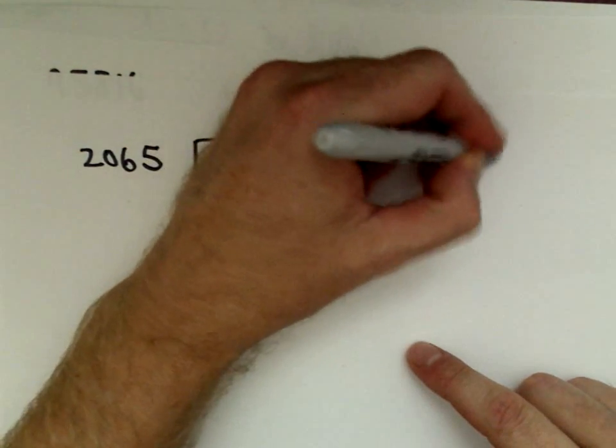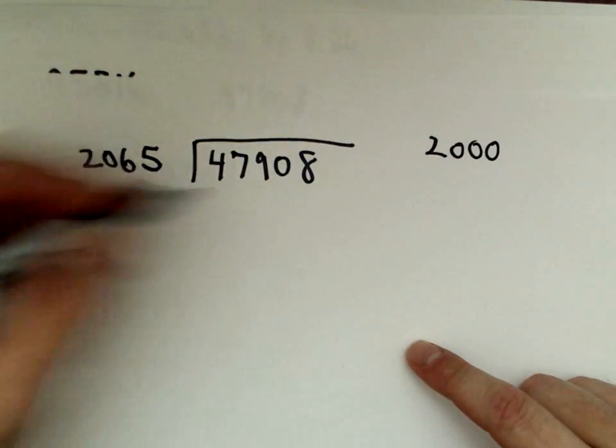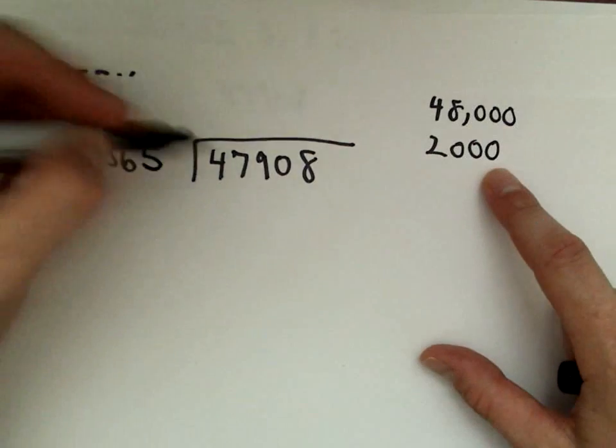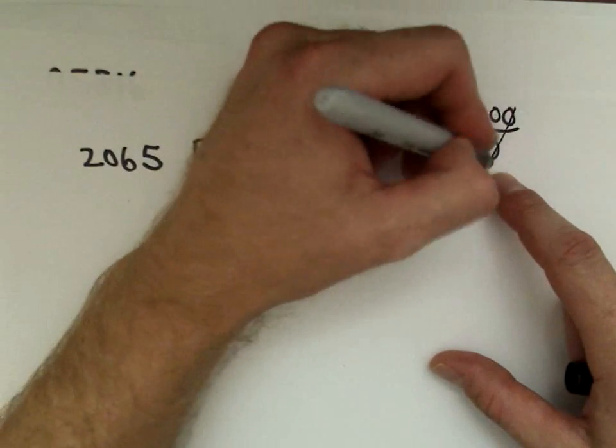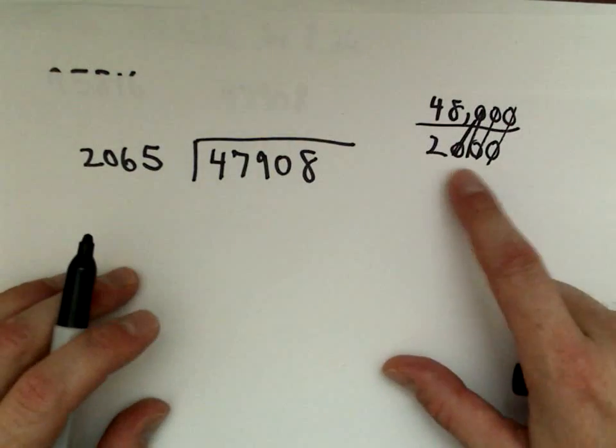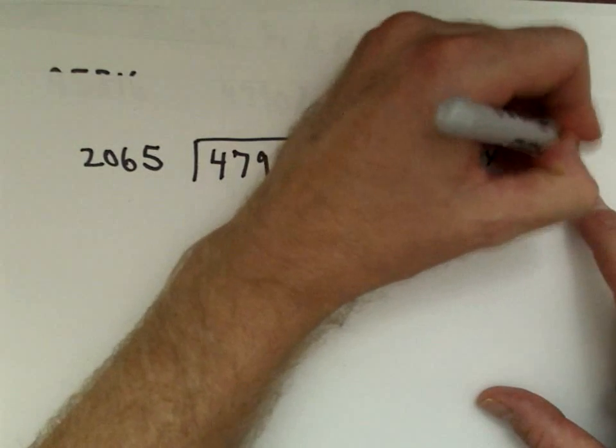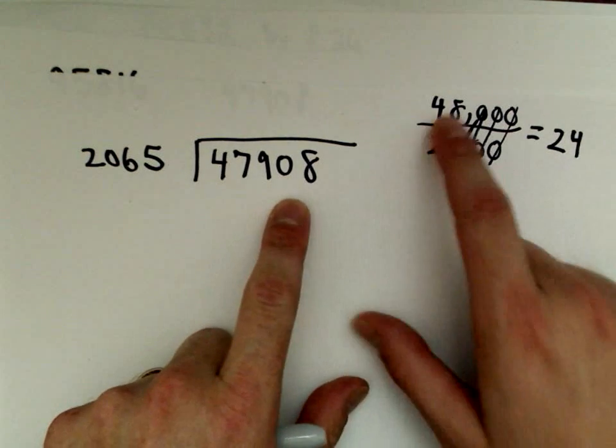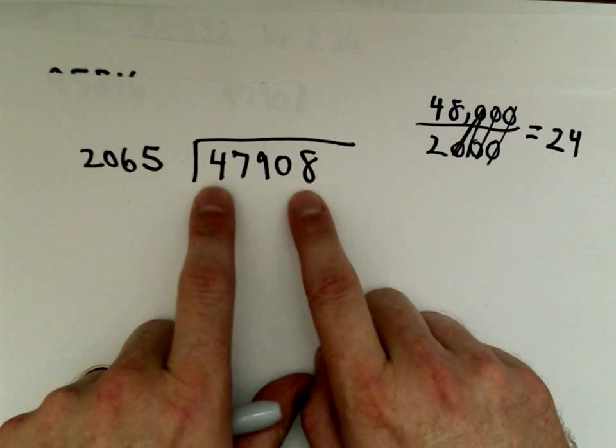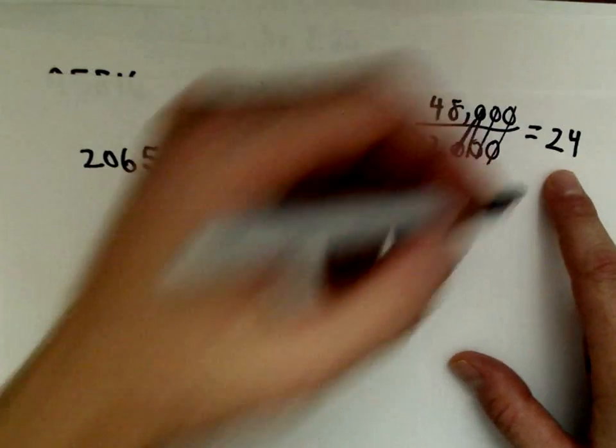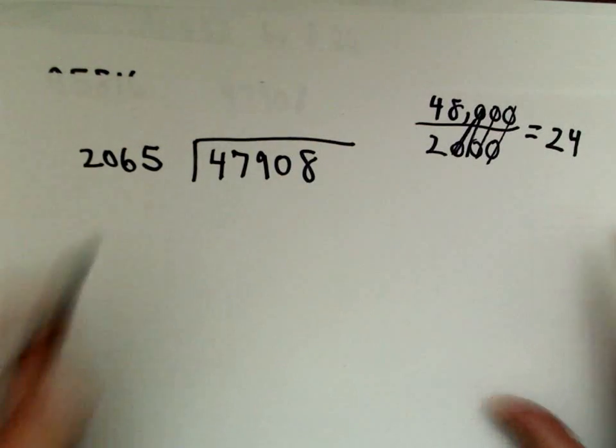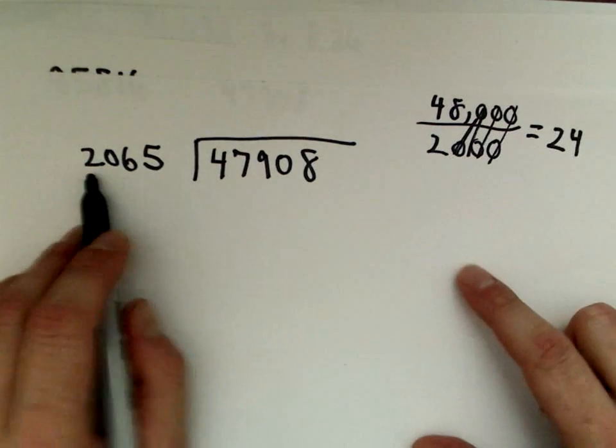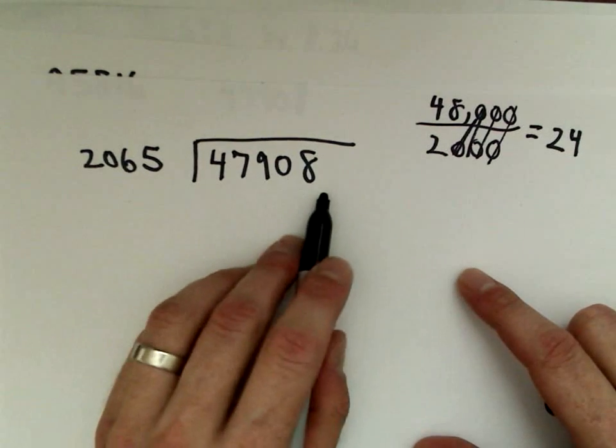In my head, I'm going to start estimating. The number on the outside is 2,000. The number on the top is pretty close to 48,000. So I'm thinking if it was 48,000 divided by 2,000, I can cancel out the three zeros. I would be left with 48 divided by 2, which is 24. So I'm thinking this number will go into this number either 24 times or, since I sort of rounded the numerator up and the denominator down, I'm thinking 24 is probably actually a little big. So I'm thinking maybe 23 is going to be the correct value. So I think my educated guess here is that 2,065 will go into 47,908 23 times. That's my guess.